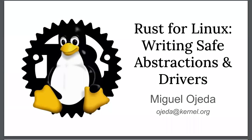Thank you Megan for having me. This mentorship session is about writing safe abstractions and drivers. The most important part is to understand what a safe abstraction is and what the difference is between writing a subsystem in C versus Rust. I will give an introduction on the concepts of unsafe and safety in Rust, and then we will go through an example of an abstraction and a very small, trivial module.